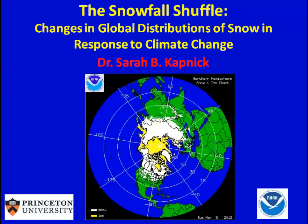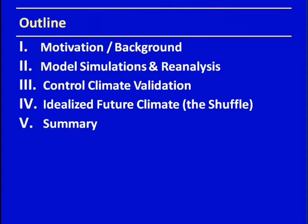The first slide is just to orient us in the Northern Hemisphere. Right now in March, you have snow cover mainly over all the land masses in the Northern Hemisphere — over North America and much of Europe and Eurasia, shown in white. Snow is a major part of the climate system. The talk outline covers motivation and background, model simulations and reanalysis, control climate validation of the new GFDL model, an idealized future climate of what snow is going to look like — the snowfall shuffle — and a brief summary.